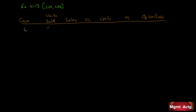Case 1: we know we're selling 9,000 units, total sales are $270,000, variable expenses are $162,000. We don't know the contribution margin per unit, but we know our fixed expenses are $90,000, and we don't know our operating income or loss. So we have to figure out what's going on here.